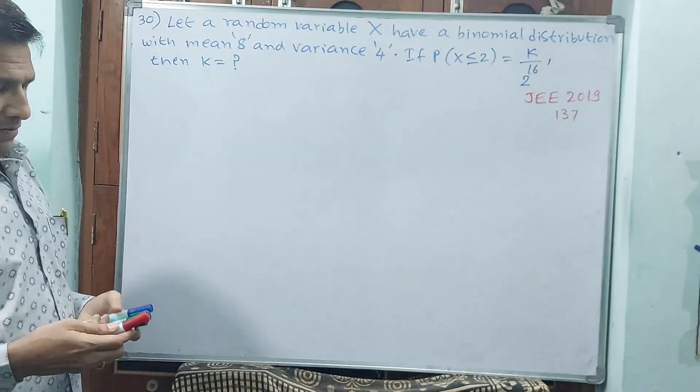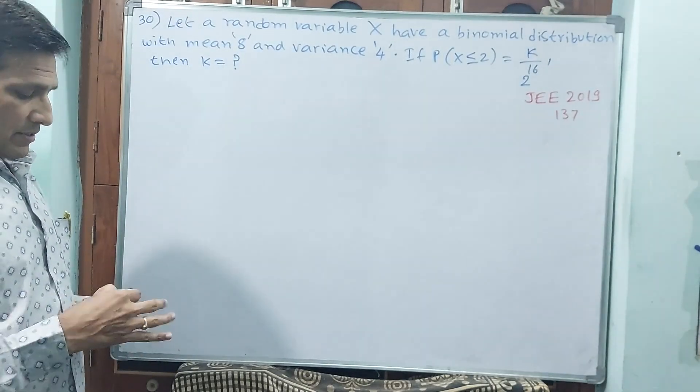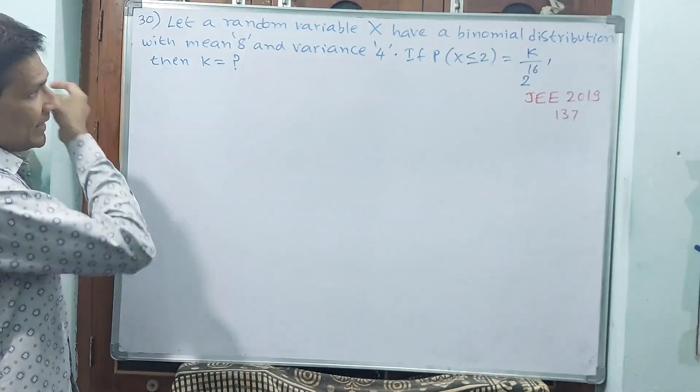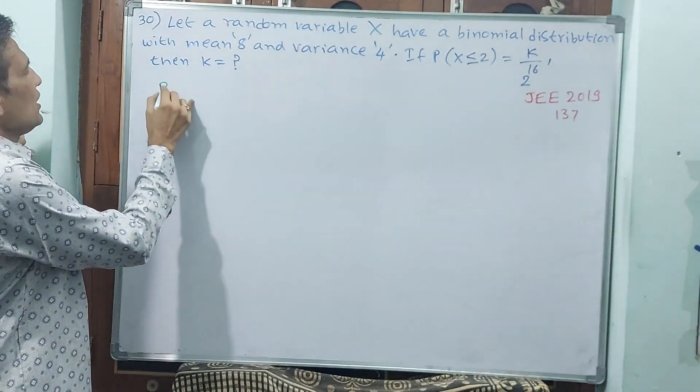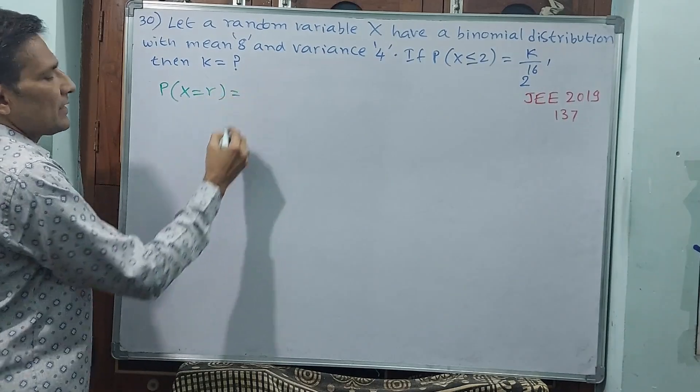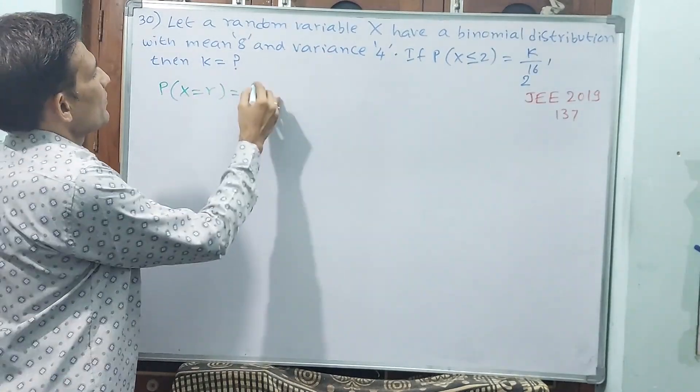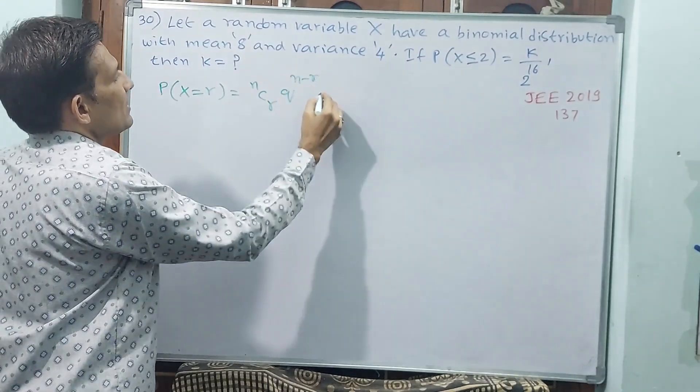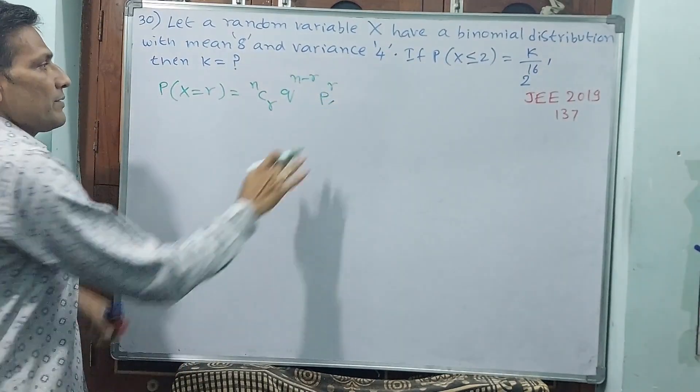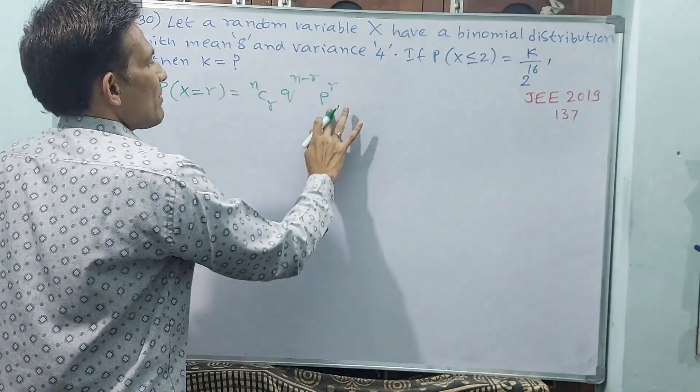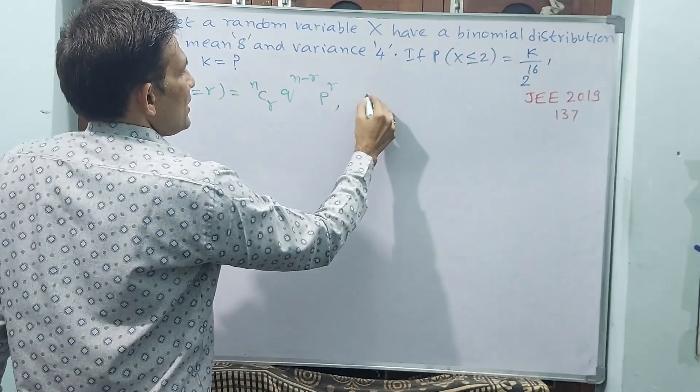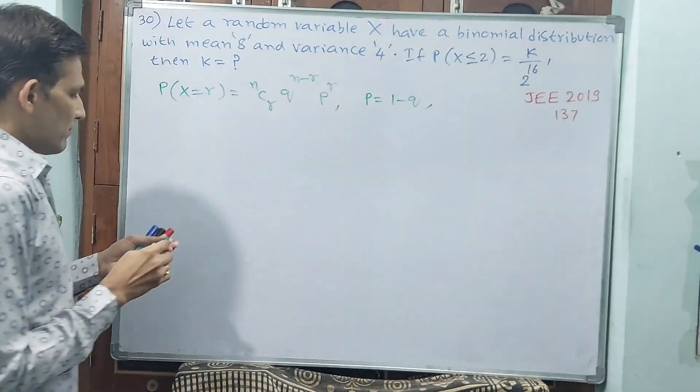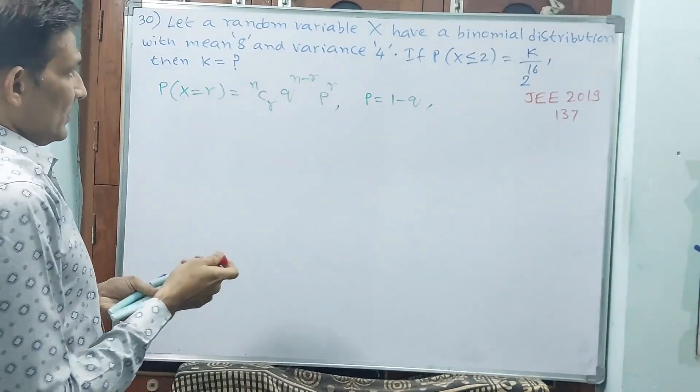Let me reiterate these formulas once again. Four formulas are there. See how I am writing: P(X=r) = nCr × q^(n-r) × p^r. And see, p = 1-q, q = 1-p. This is the set of formulas.